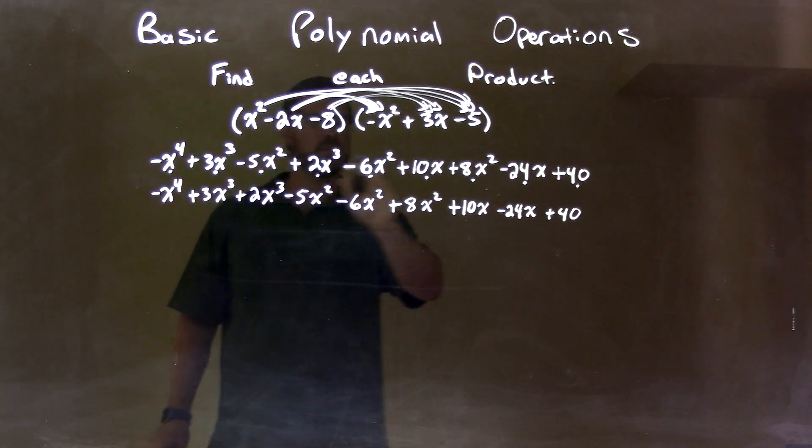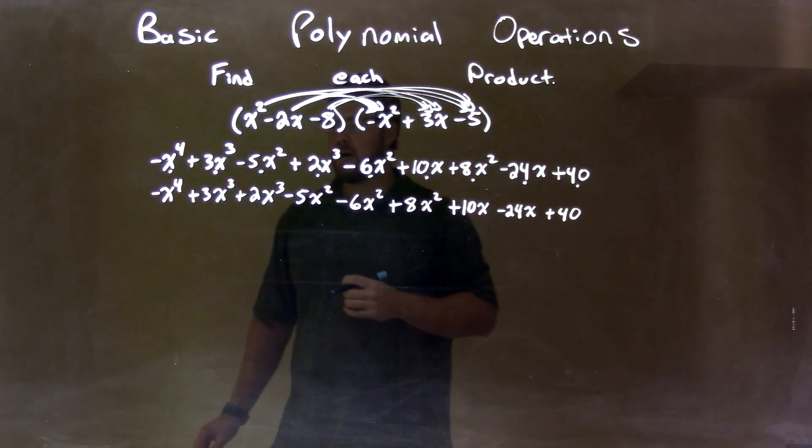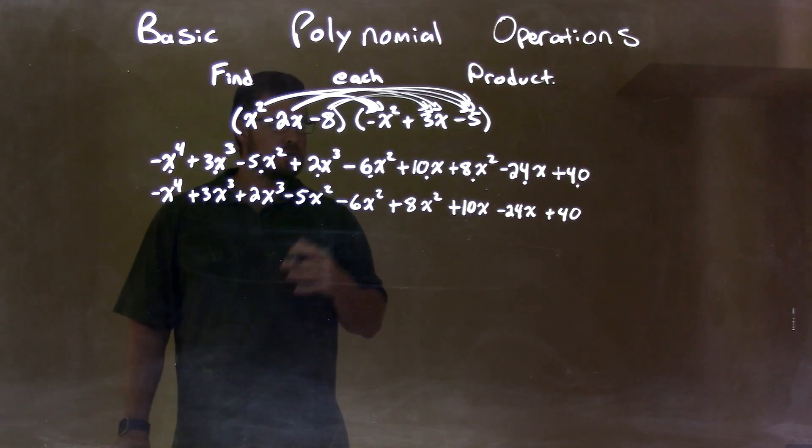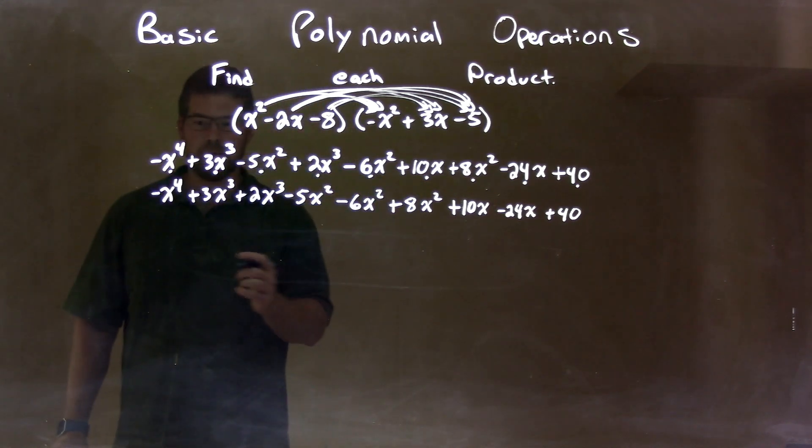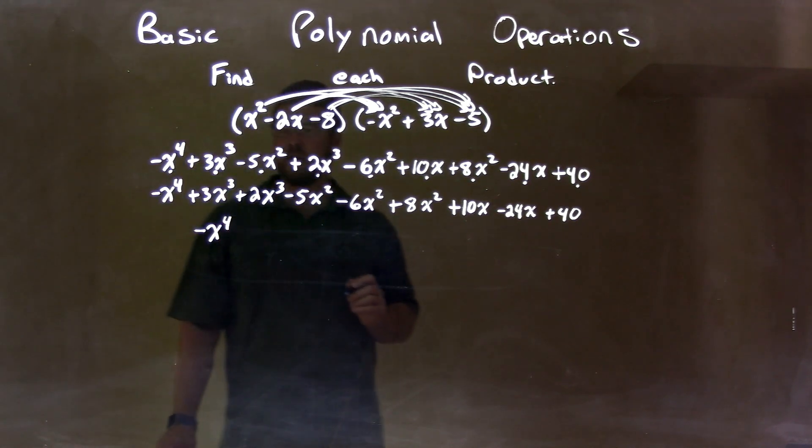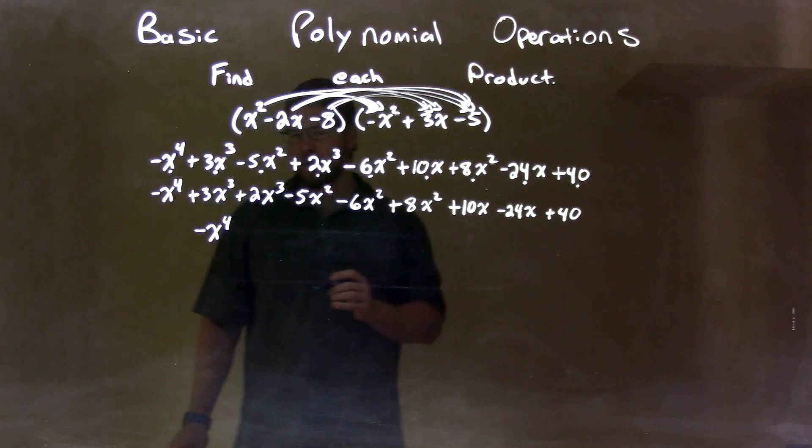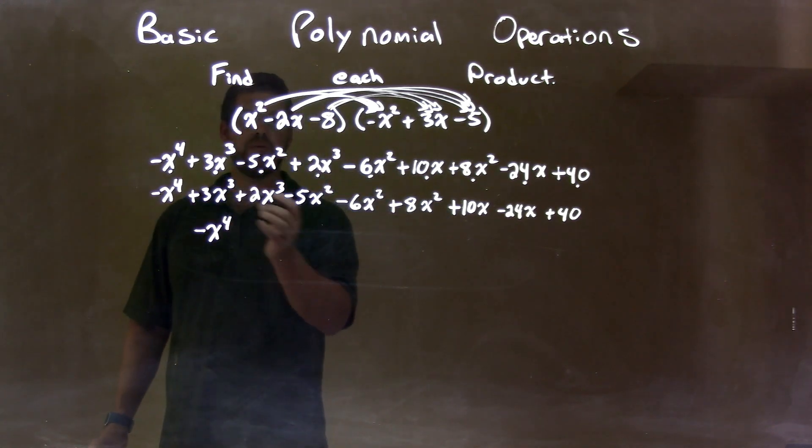And, I should now have every single term brought down. So, now, let me simplify this. Combine the like terms. Well, negative x to the fourth is the only fourth power there. But, the third powers, we have 3x to the third and 2x to the third power. Well, we add those together.